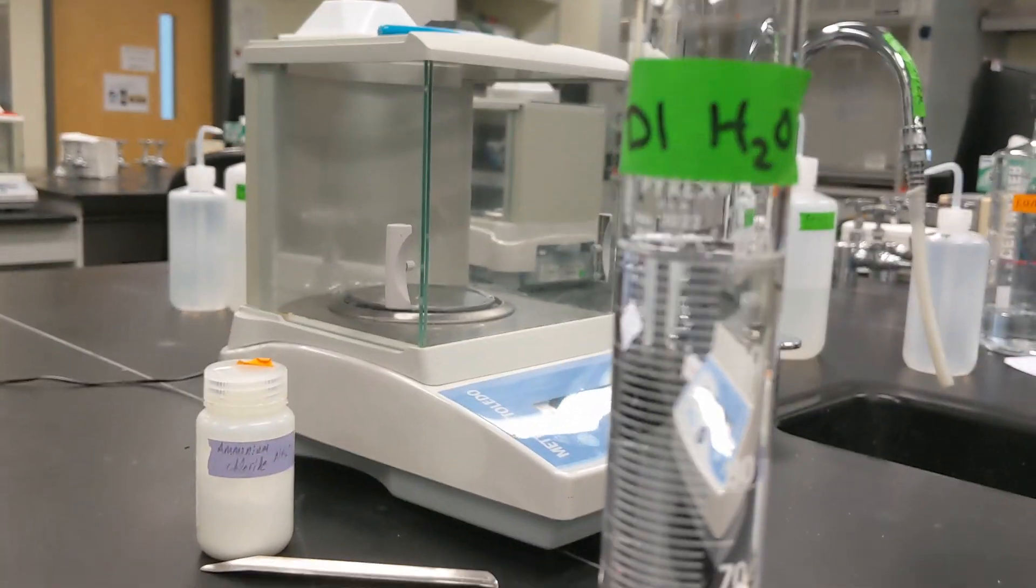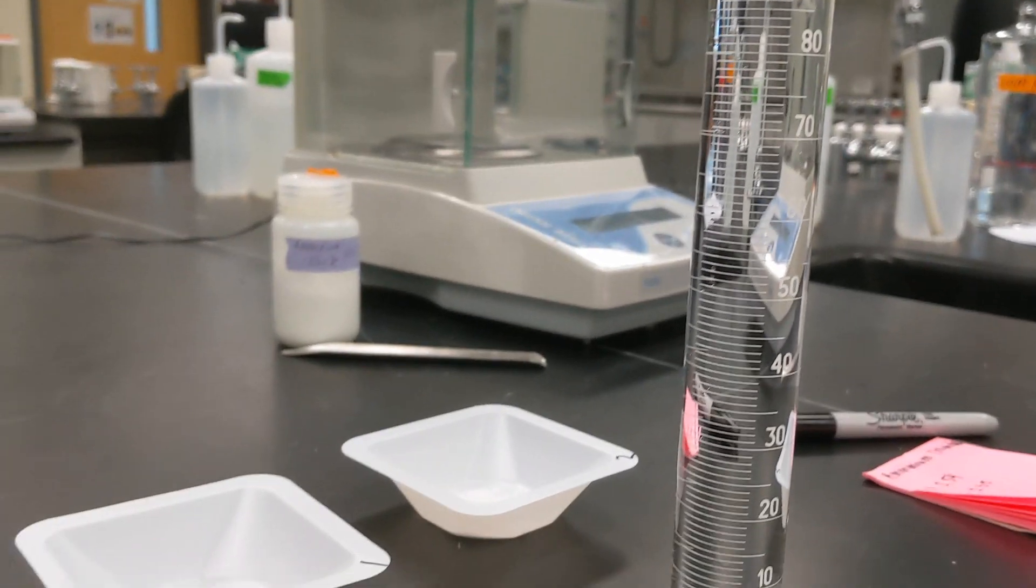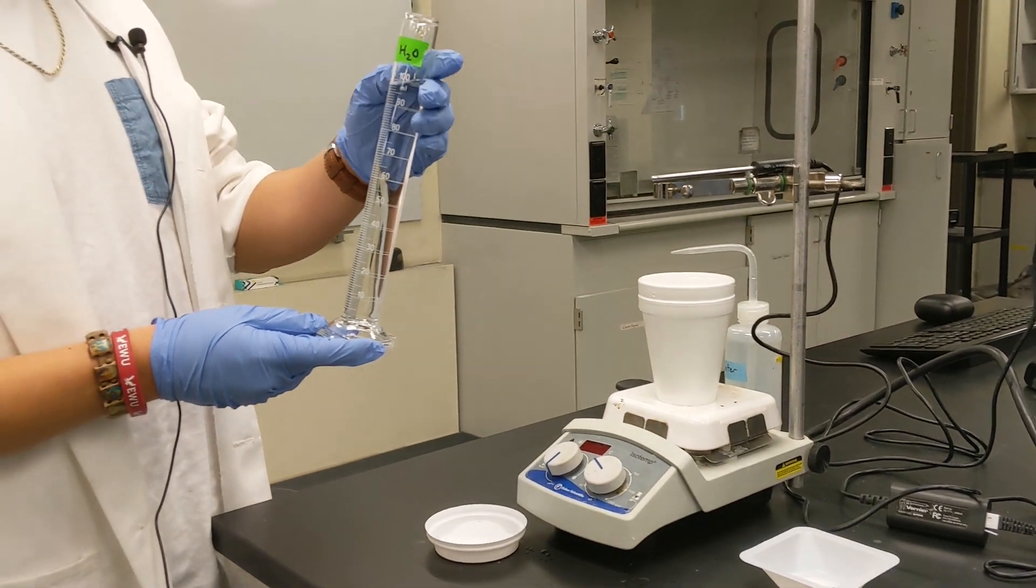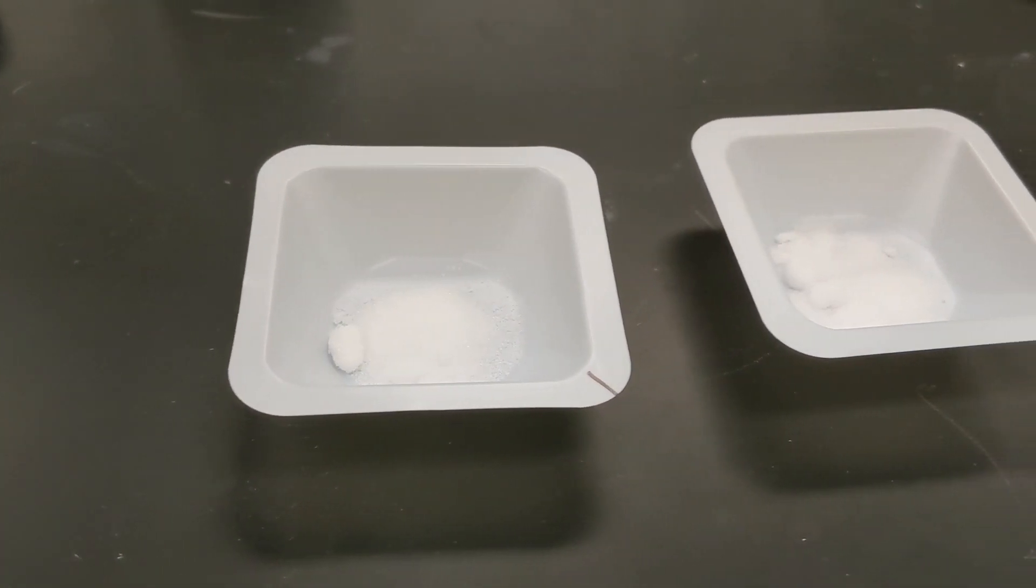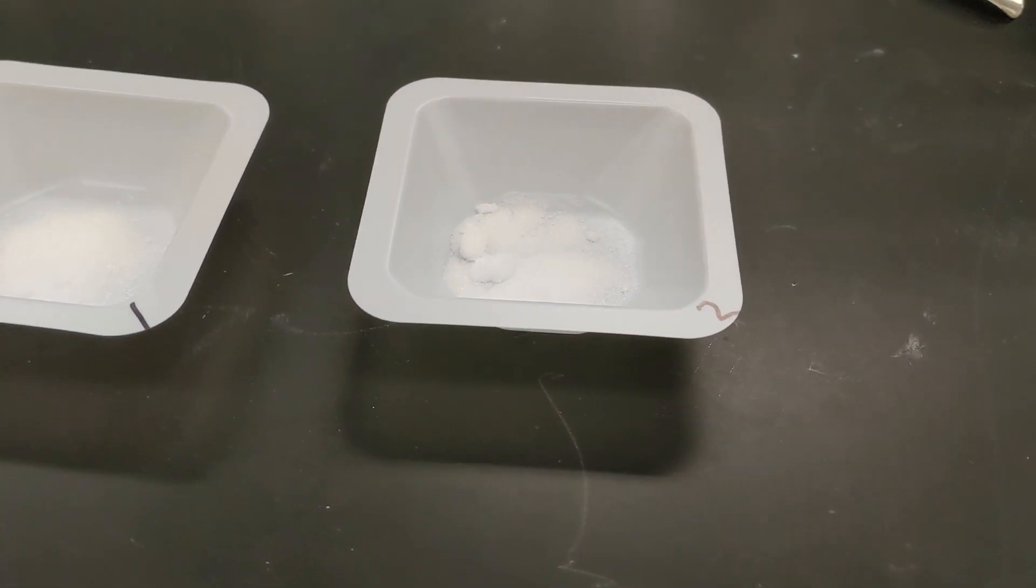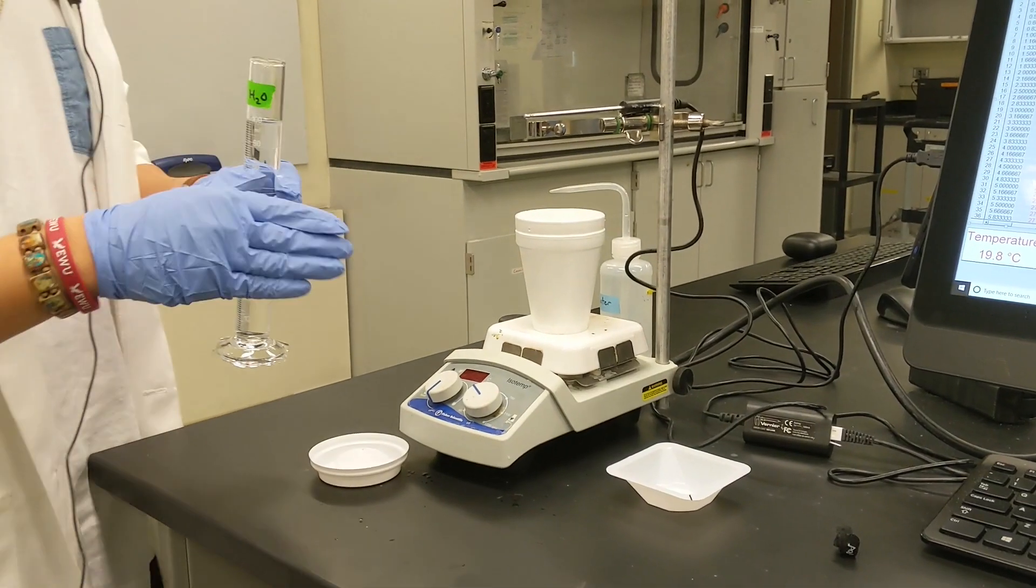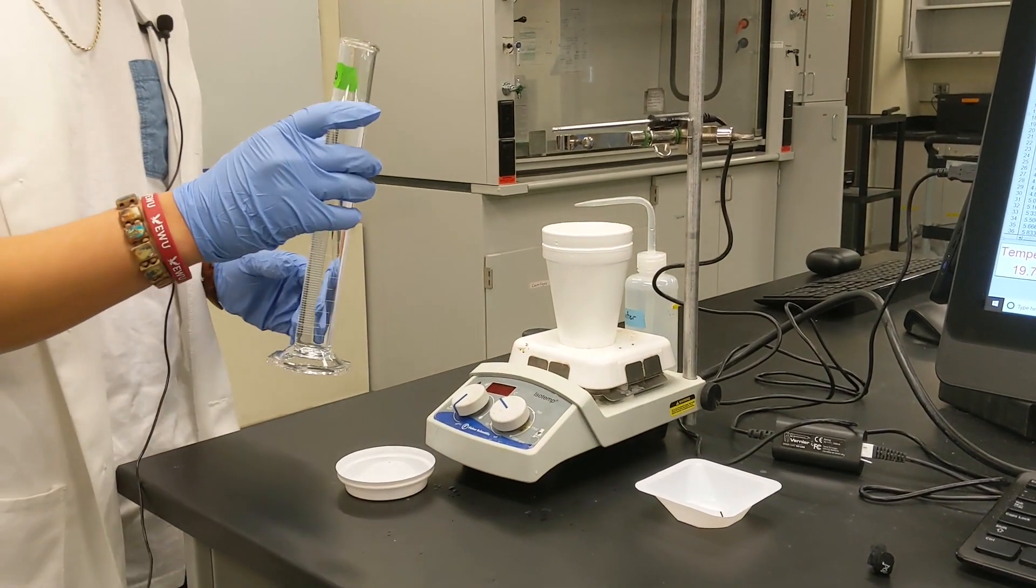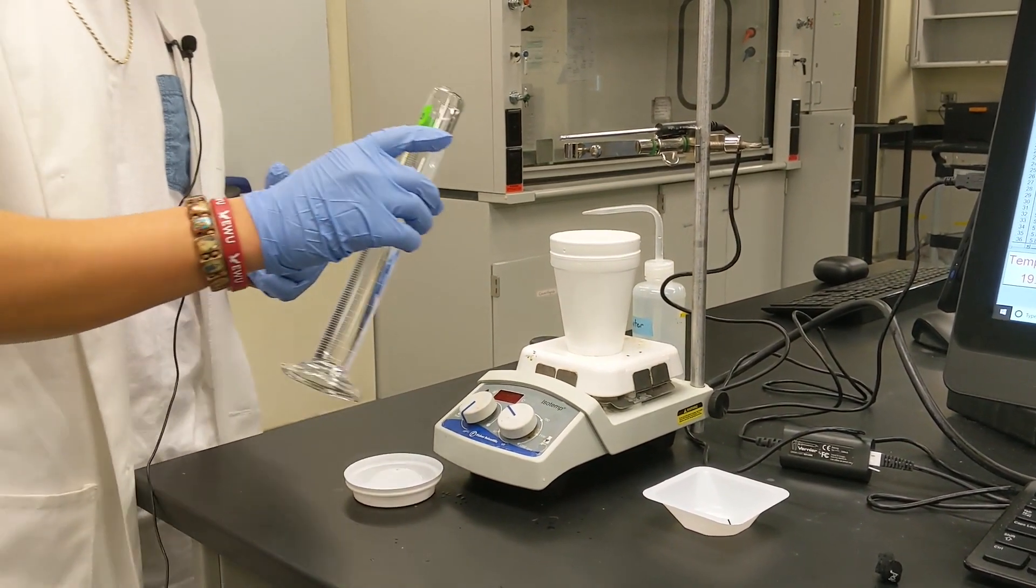So now we're going to add our 100 mL of DI water to start part C of the lab, where we're going to do the enthalpy of solution. I have here my weighed out ammonium chloride, but I'm going to add that after I let the calorimeter stabilize for about three minutes, the same way we did on the previous steps before.